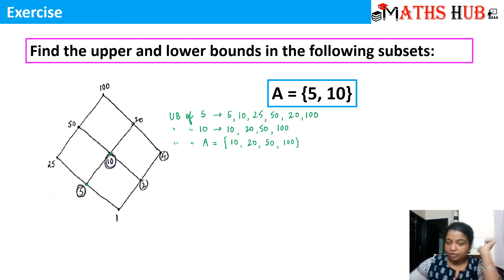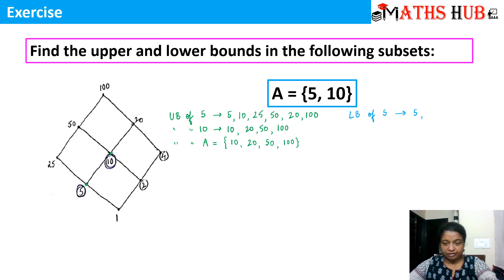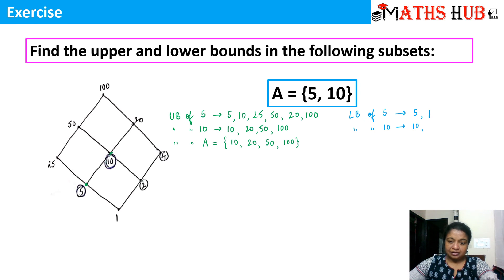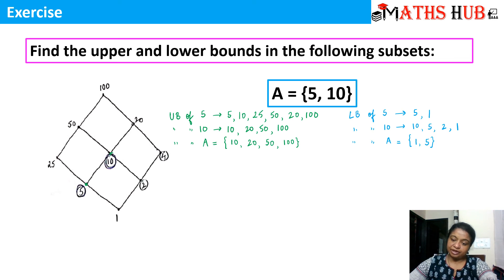Now the lower bounds of element 5: 5 itself and all elements below it, which is only 1. The lower bounds of element 10: 10, 5, 2, and 1. The lower bounds of set A are the common elements: 1 and 5.